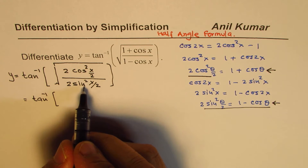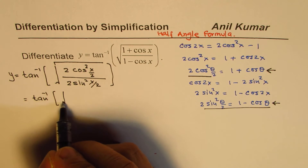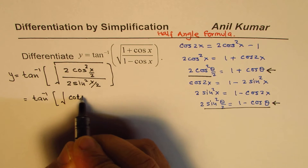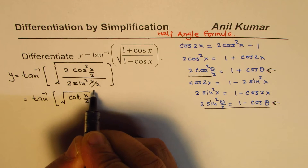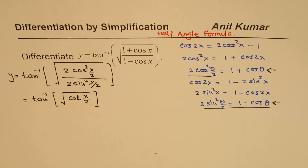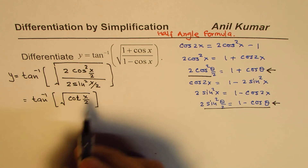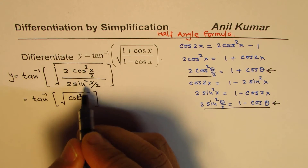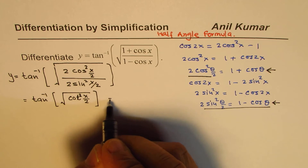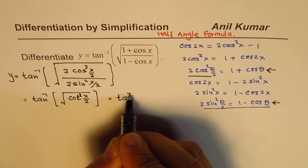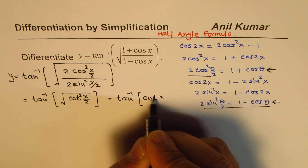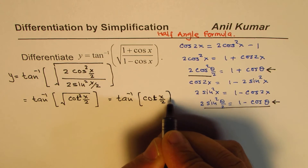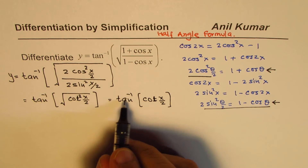This gives us tan inverse of cot(x/2). Now we wanted tan — so how do we get tan from cot? Taking the square root of cos²(x/2) over sin²(x/2) gives cot(x/2), and we write tan inverse of cot(x/2).